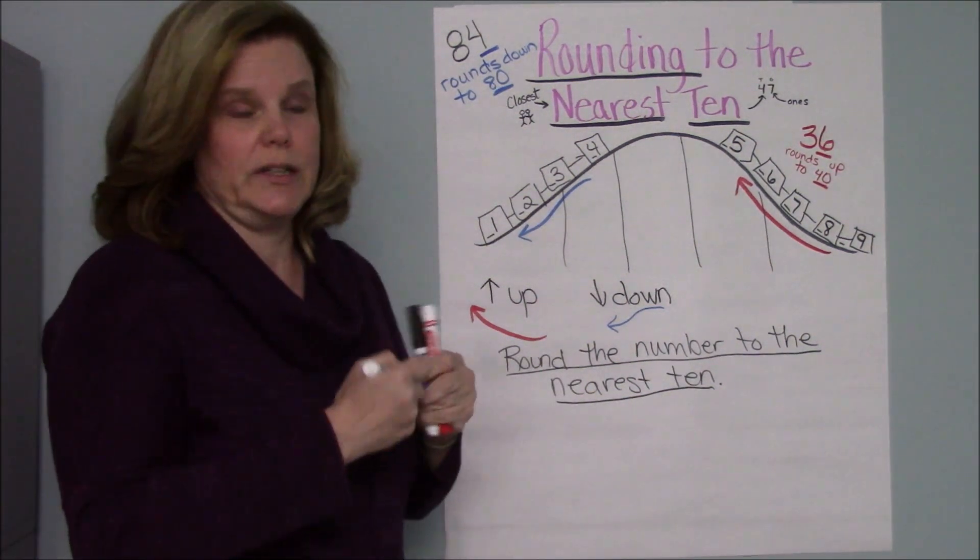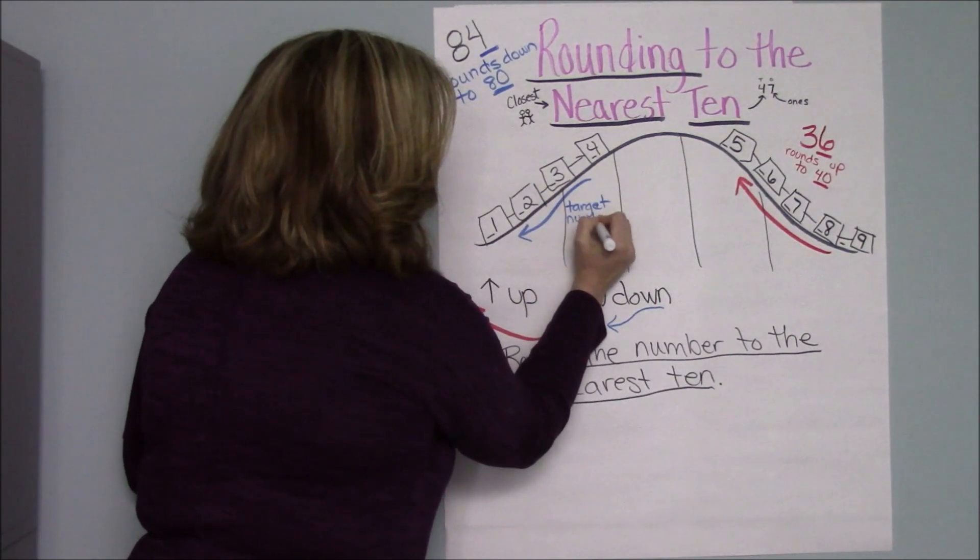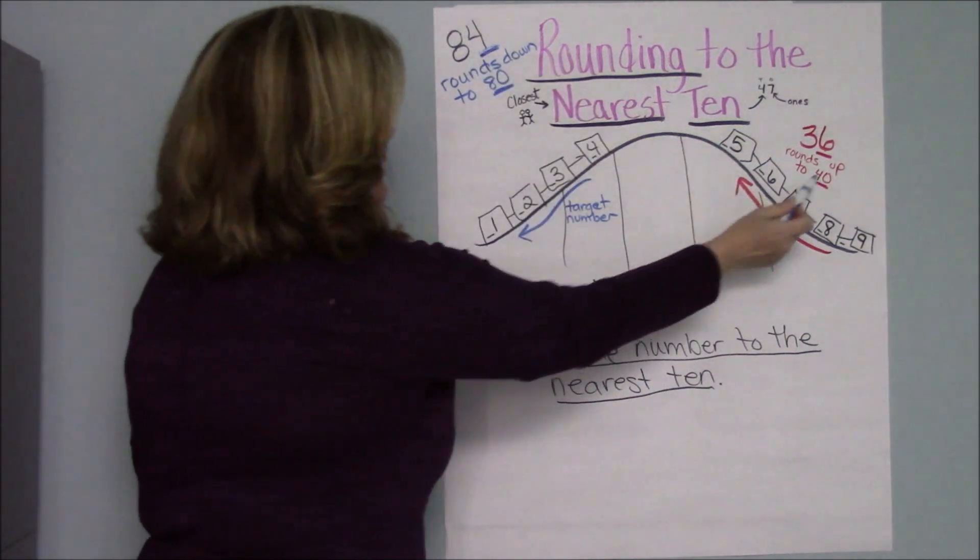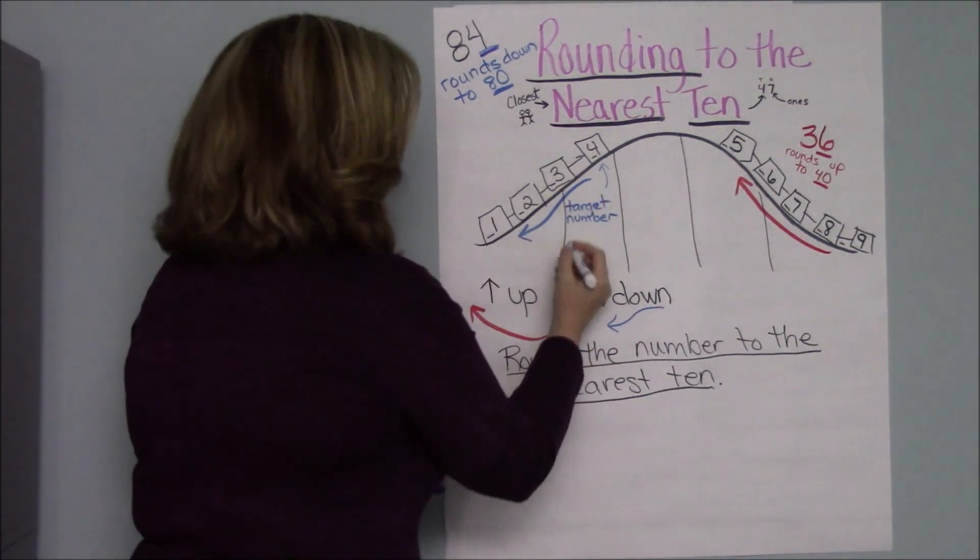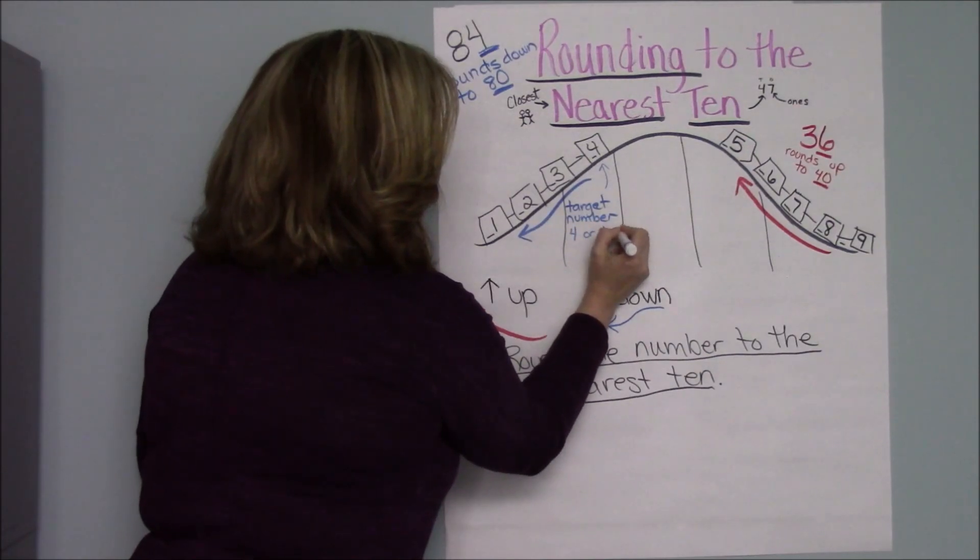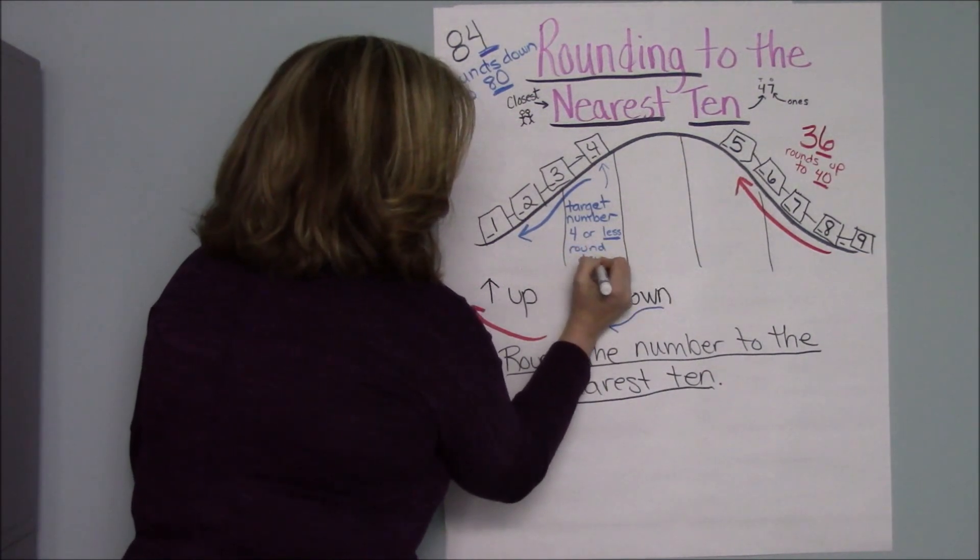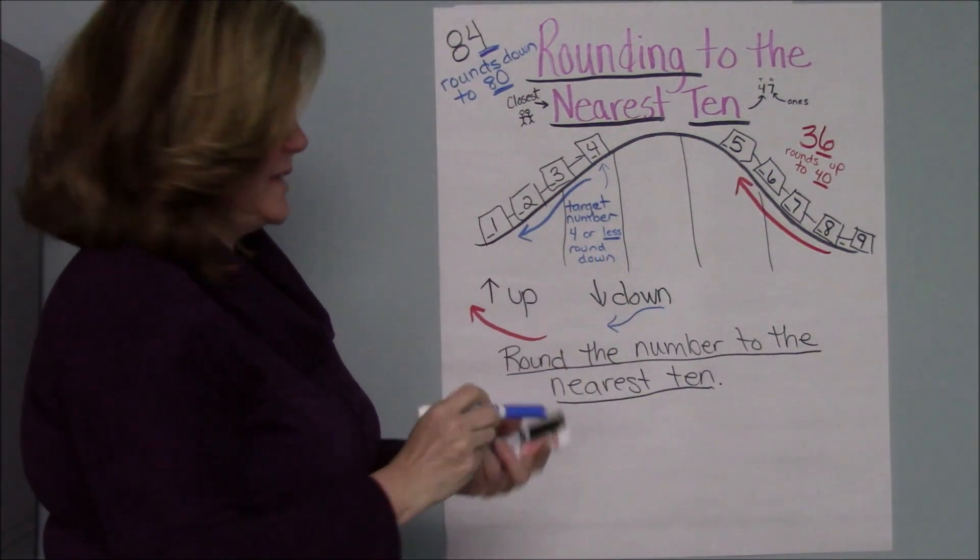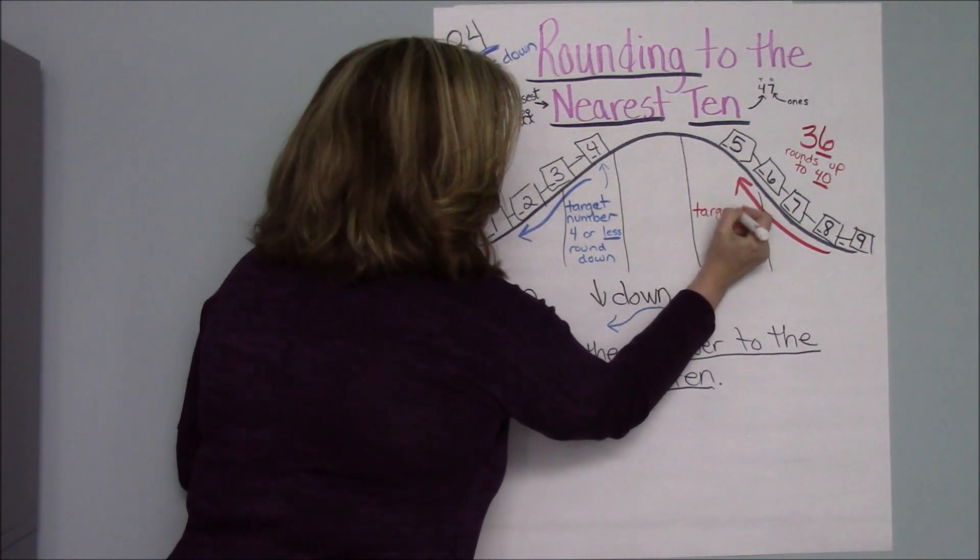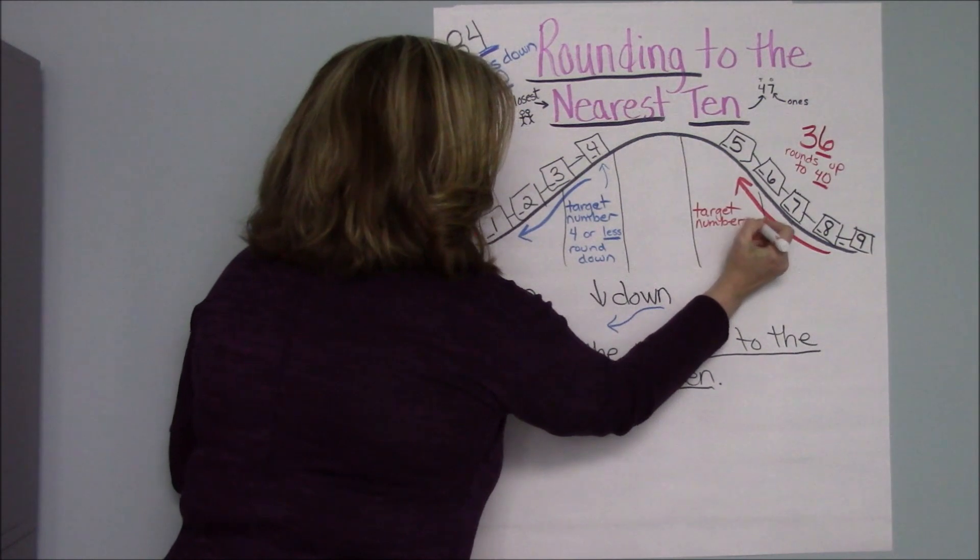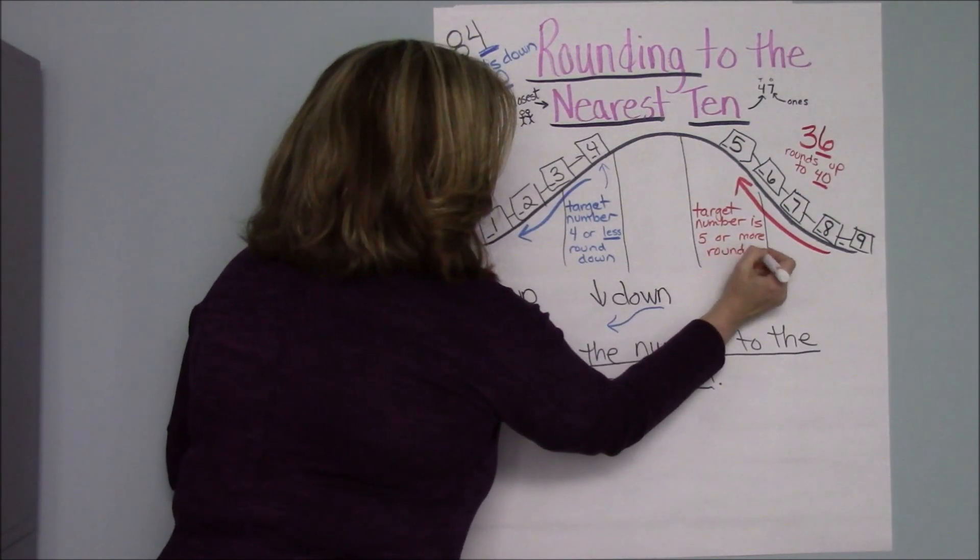Another term I want you to know is target number. The target number is this one that we've been talking about, the one on the roller coaster. These are our target numbers. If your target number is four or less, you round down. If your target number is five or more, you round up.